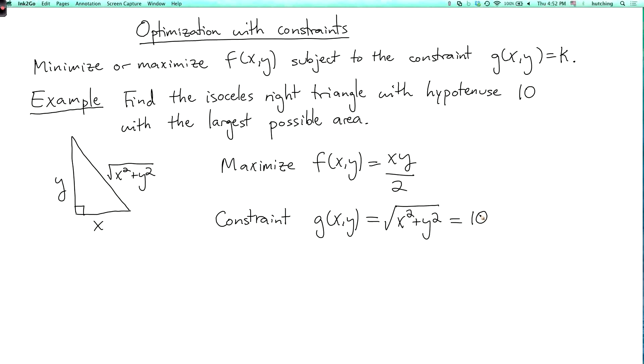The simplest approach is to use the constraint to eliminate a variable. We know that y equals the square root of 100 minus x squared. If I just square both sides of this equation and subtract, I get this equation for y.